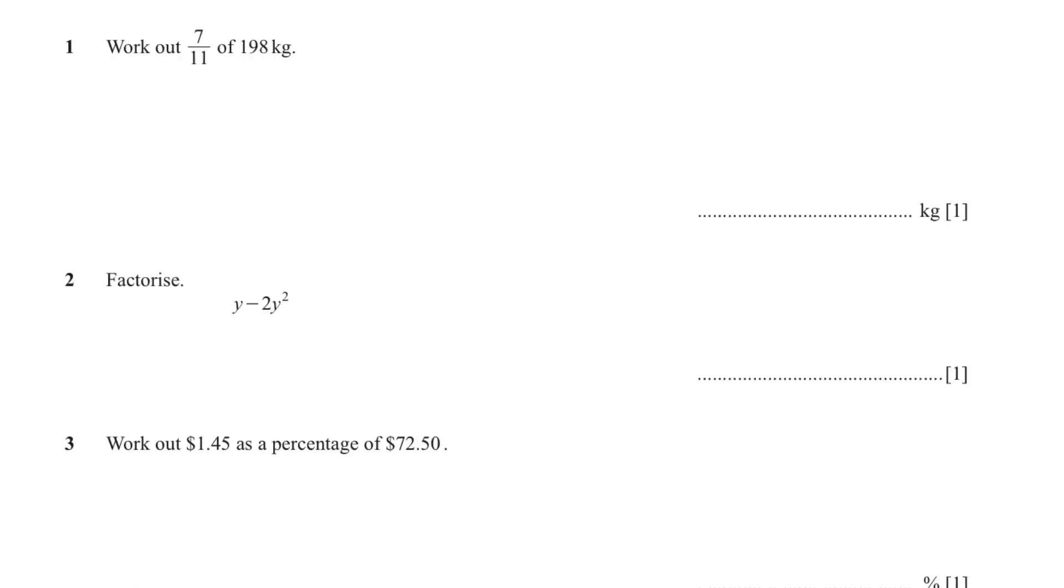The first question, work out 7 over 11 of 198 kilograms. Of means multiply. So it's a very easy question, you just have to put in the calculator, multiply by 198 and you will get the answer 126.